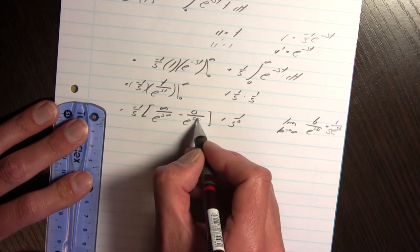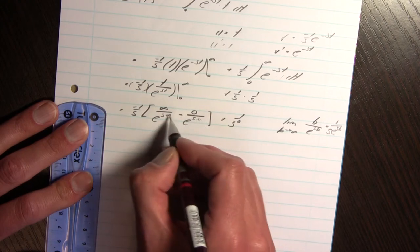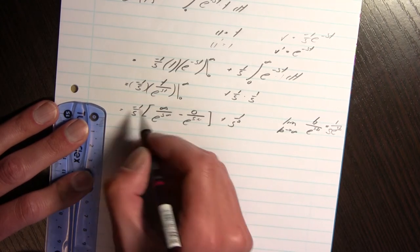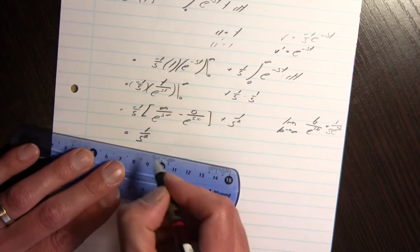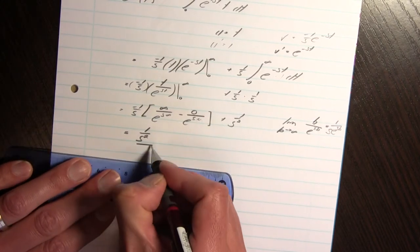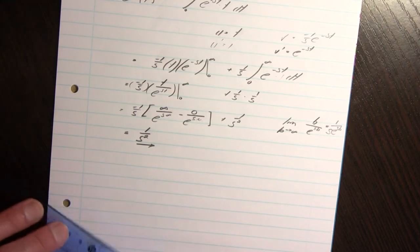So that's 0 minus 0. This is 1. That's 0. 0 times this is 0. So it's just 1 over s squared. There we go. The Laplace transform of t to the power 1 is 1 over s squared.